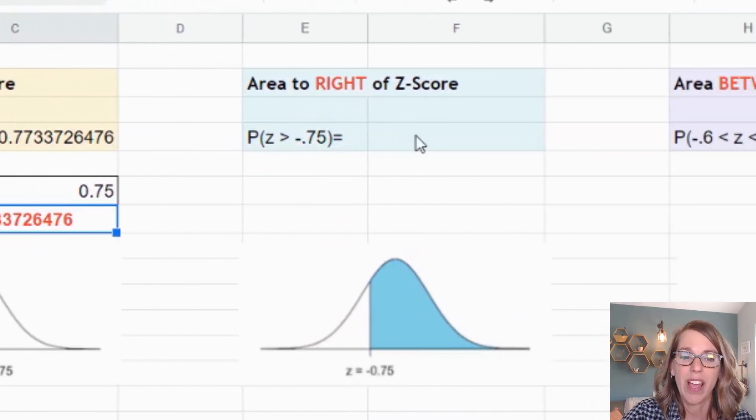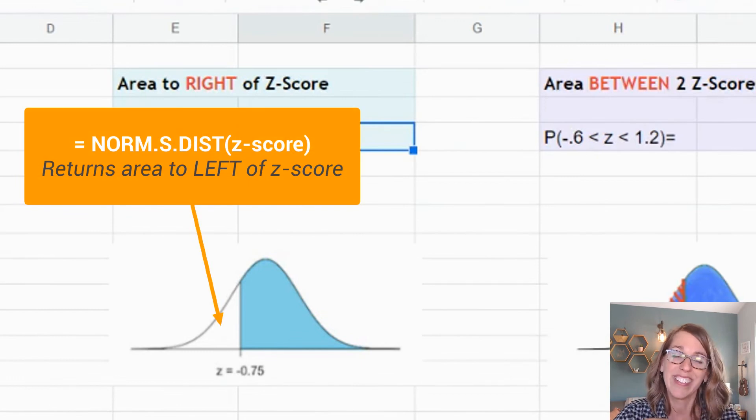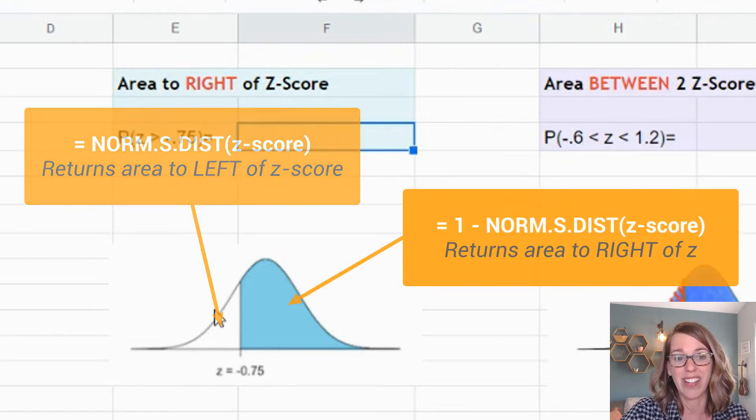Let's do the area to the right. Now, I know that NORM.S.DIST automatically gives me an area to the left, but I want instead an area to the right. So what I need to do is subtract from the entire area the area that NORM.S.DIST gives me.